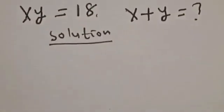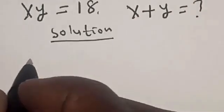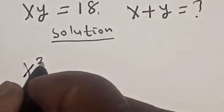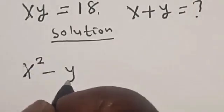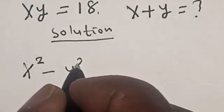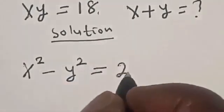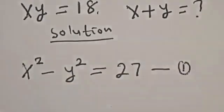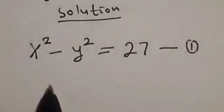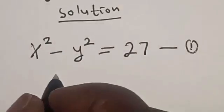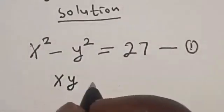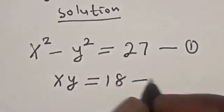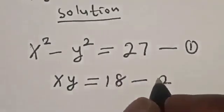We have the given equation: x squared minus y squared is equal to 27. Let's call this equation 1. Then we have xy is equal to 18. Let's call this equation 2.